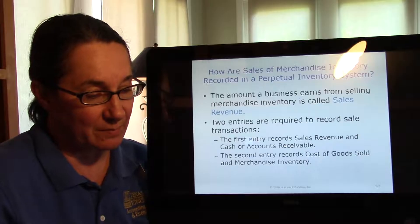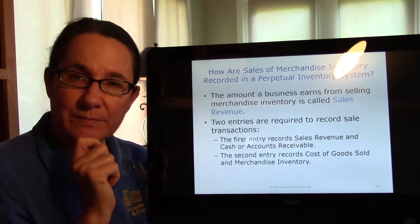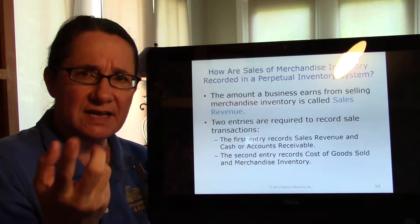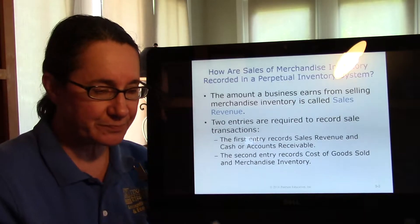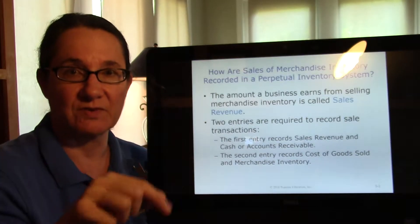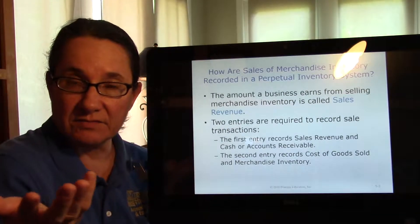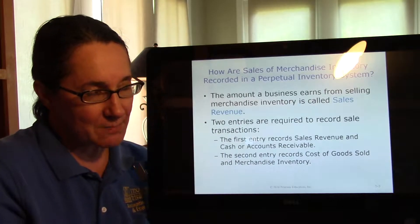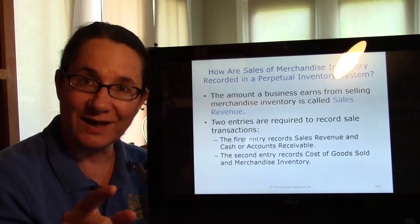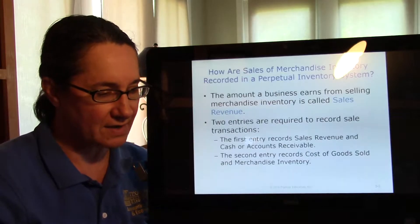Sales revenue is the amount that a merchandiser earns from selling its merchandise. So instead of having just one thing going on, in a perpetual inventory system you have two things going on for every sale. One, you record the sale — sales revenue and cash, or sales revenue and accounts receivable, same as before. Then we have to take care of the inventory part. If we sold some inventory, we no longer have it, so we have to get that inventory out of our stock and recognize the expense — the expense we call cost of goods sold.